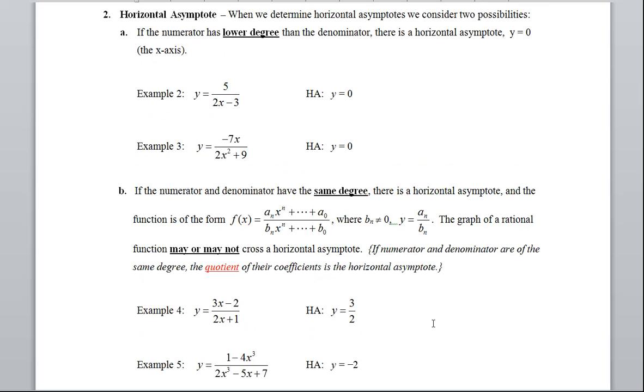So in these two horizontal asymptotes, a is the numerator's lower degree than denominator. B, numerator and denominator have the same degree.